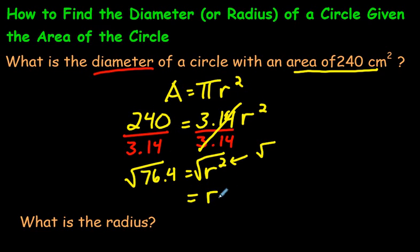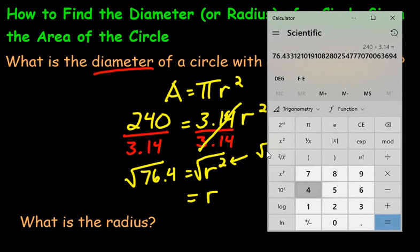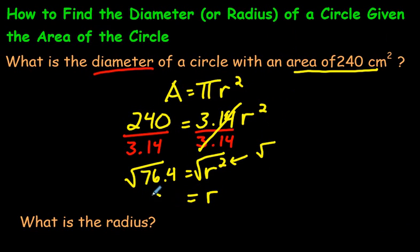That will give us the radius, r is equal to 76.4. We have to take our calculator again, and take the square root. I think on this calculator you have to do it the other way around. Type in 76.4, then hit square root. There it is. 8.7. I'm going to round it off to 8.7.